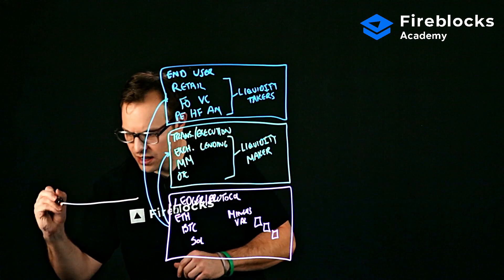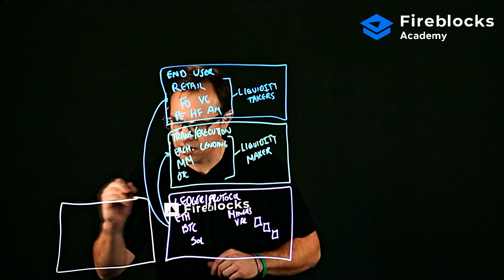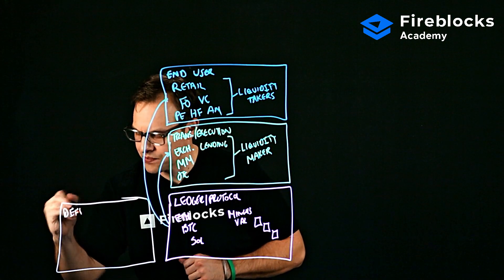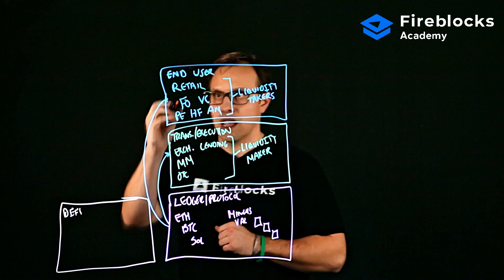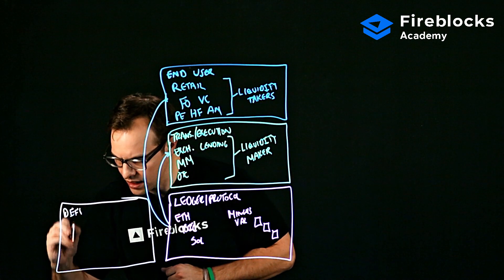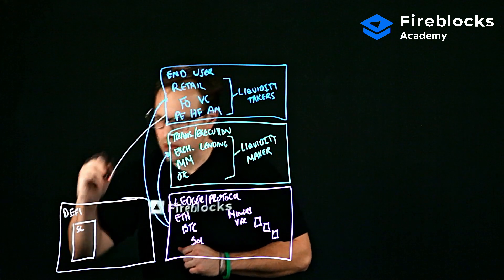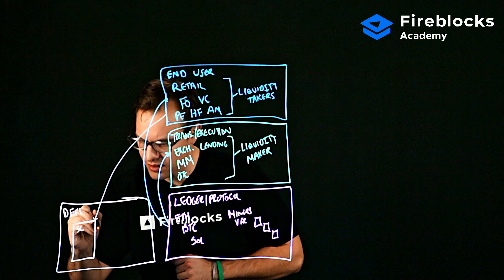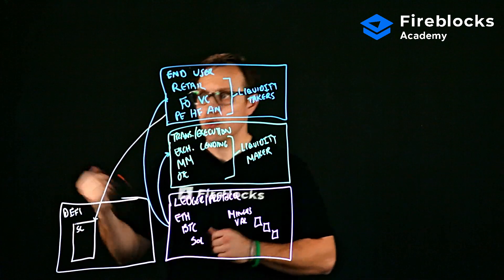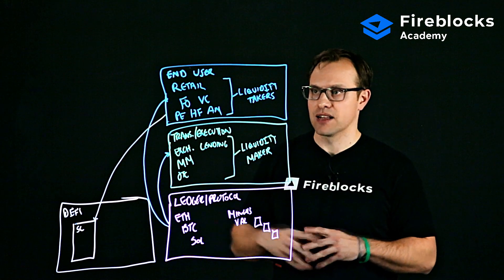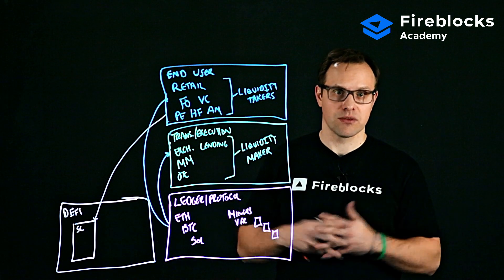Another layer kind of tangential to the protocol layer is what I would call the DeFi layer. And the DeFi layer, end users can essentially take their digital assets, place them in a smart contract, and either borrow or lend in those tokens or assets that they are transacting in to earn a little bit of extra yield or get some extra liquidity.